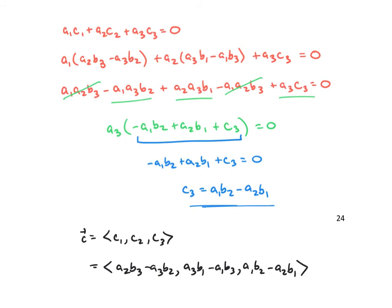So there it is — that's just one of the ways you can look at this cross product formula. It isn't the only way, but it has a lot of algebraic manipulation. I think using the determinant is easier than memorizing the formula, but I hope it's helpful to at least see this proof.